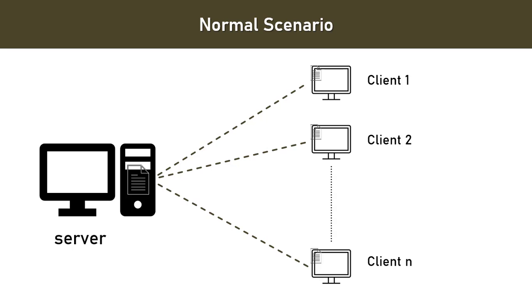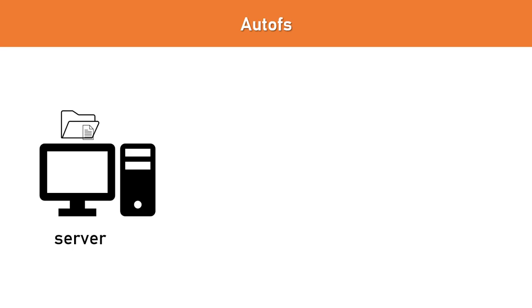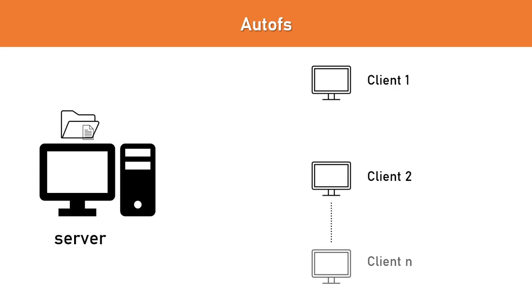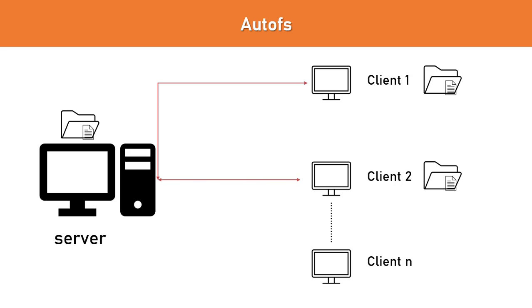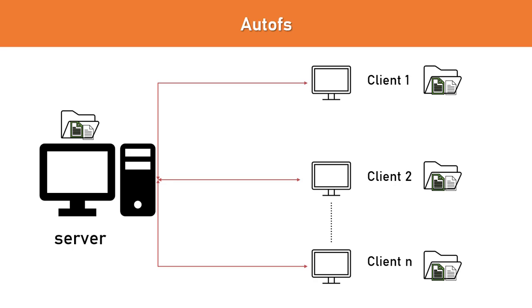With NFS, what we can do is create a directory on the server and keep whatever files we want to share in that directory. Any client which wants to access these files can connect to the server, and as soon as they connect, the shared files will be visible to that client. If you want to share another file, you simply keep that file in the shared directory and it will be available to all connected clients.